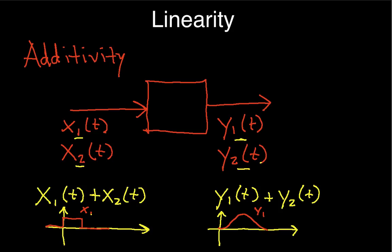I have as x2 maybe another rectangular pulse, but this one goes negative. So, this will be x2. And let's suppose that the response of the system to this x2 is something that looks like this. So, this would be y2.